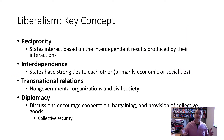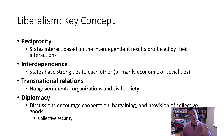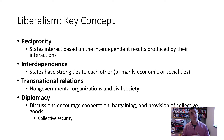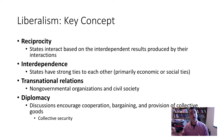To recap the key concepts in liberal theory: Reciprocity — states interact based on the interdependent results produced by their interactions, a key element of the iterated prisoner's dilemma. Interdependence — states have strong economic and social ties to each other. Relationships between societies and individuals matter, not only between governments — through transnational relations, non-governmental organizations, and civil society. We have an embryonic form of global civil society based on the normative consciousness that we are all bound together by our common humanity.